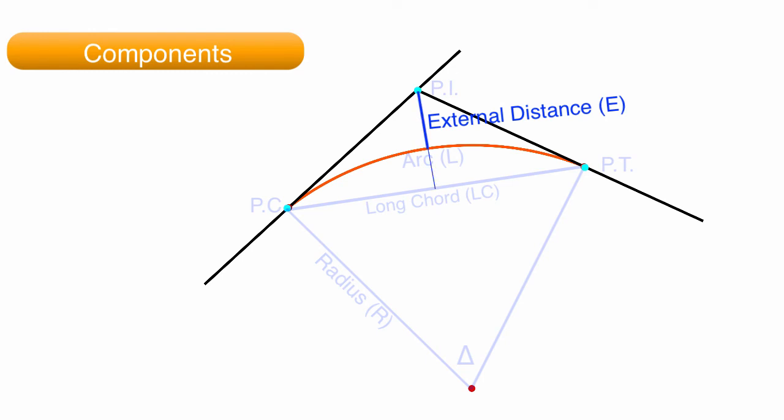This distance falls on a line connecting the PI with the center of the curve. The middle ordinate distance is the distance between the long cord to the arc measured along a line perpendicular to the long cord, and coinciding with a line between the PI and the center of the curve.